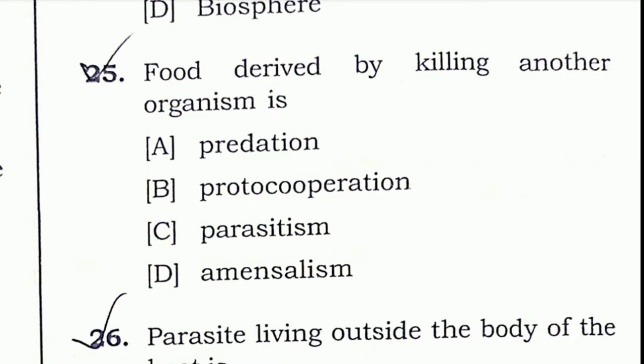Question 25: Food derived by killing another organism is — predation. In the predation process, one bigger organism or animal kills the smaller one and eats it.